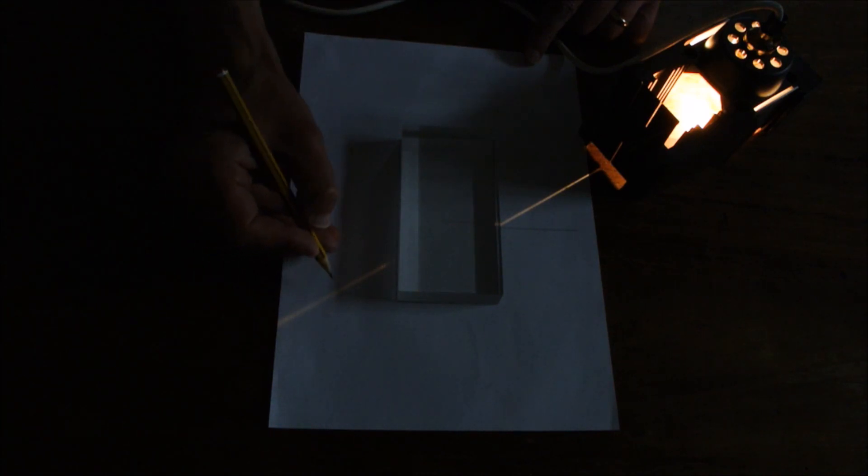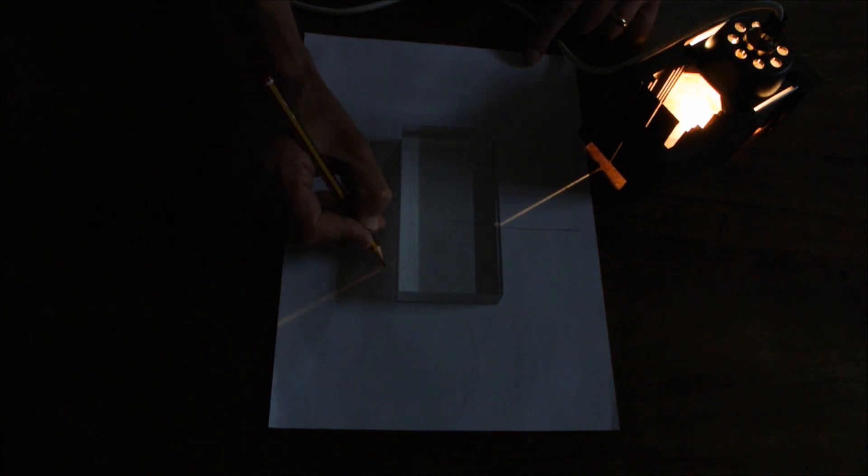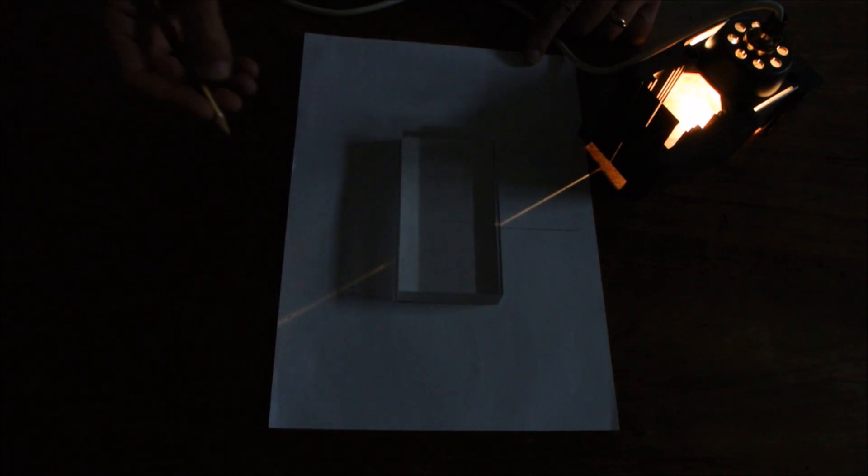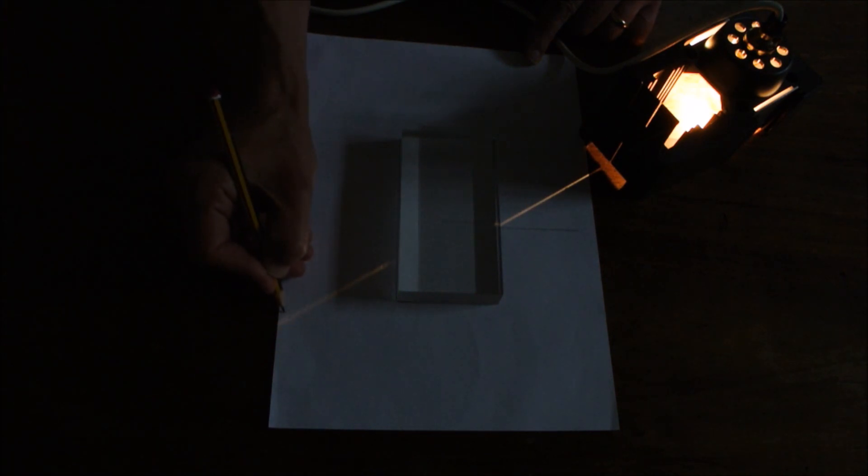And I'm going to draw on the refracted ray here, but I need to mark it in two places so that I can later on join those with the ruler. Just going to label those one here, and one here, so that we can recognise them later on.